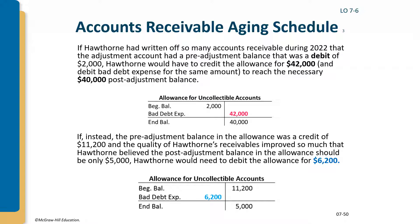Final scenario: if the allowance balance is already a credit of $11,200 but the required ending balance is only $5,000, you debit the allowance for uncollectible accounts $6,200 and credit bad debt expense $6,200. You do whatever it takes to get the allowance to the estimated ending balance and do the opposite to bad debt expense.